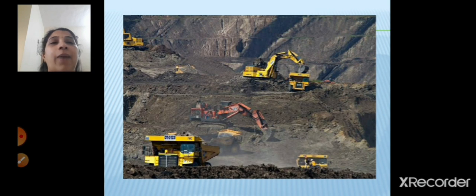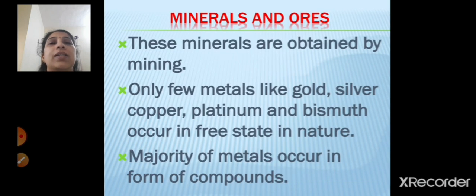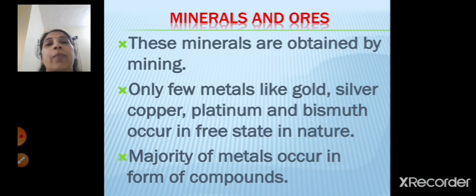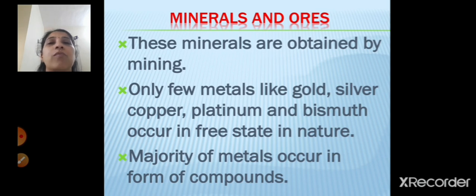This is the process of mining. In this mining process you get different types of minerals, and these minerals are obtained by mining. Only a few metals like gold, silver, copper, platinum and bismuth occur in free state in nature. The majority of the metals occur in the form of compounds — compounds being formed by the chemical combination of two or more elements — so majority of these metals occur in that form of compounds.